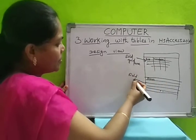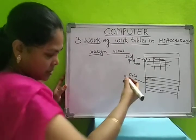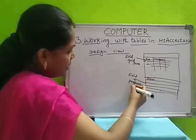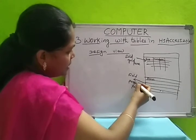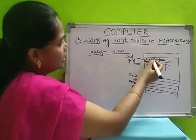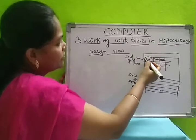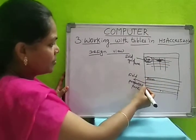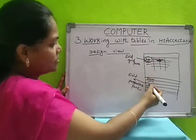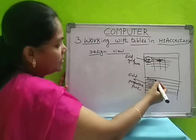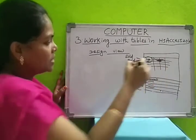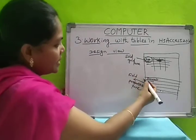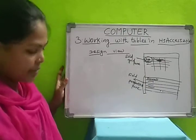Those are called the field properties pane — you can select different properties for the field. For example, if the field is S number with number data type, you can set: what is the size, what is the description, how the format, in which format you want to display, and what is the caption for that field name — all those you can select in the field properties pane.